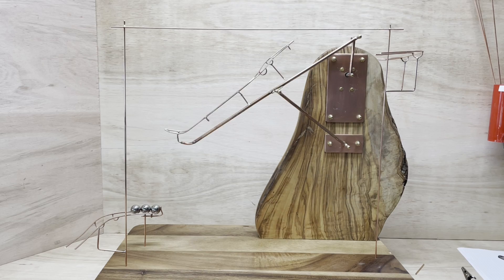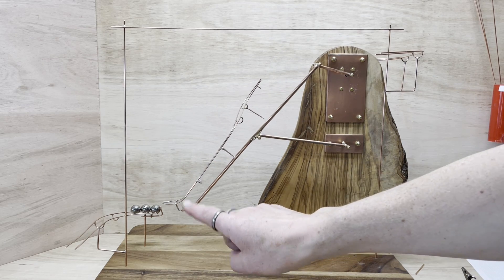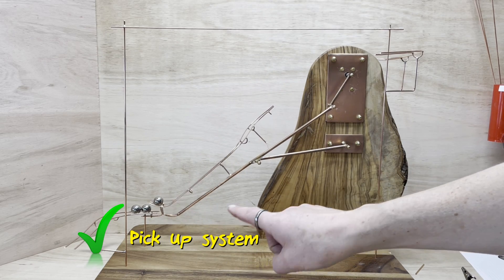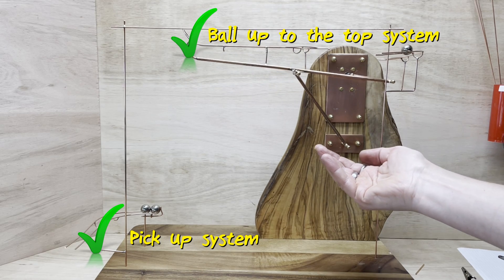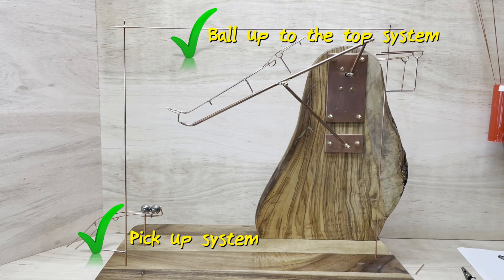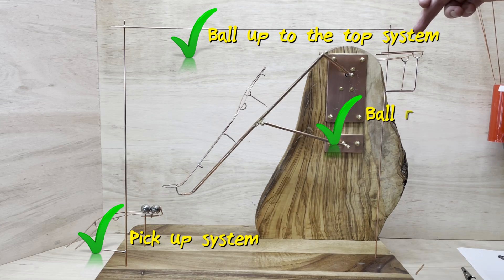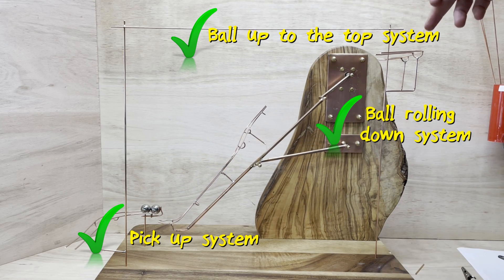So I'm calling this done in the sense that I've got a pick-up system that works, I've got a ball up to the top system that works, and I've got a ball starting to roll down the sculpture that works as well.